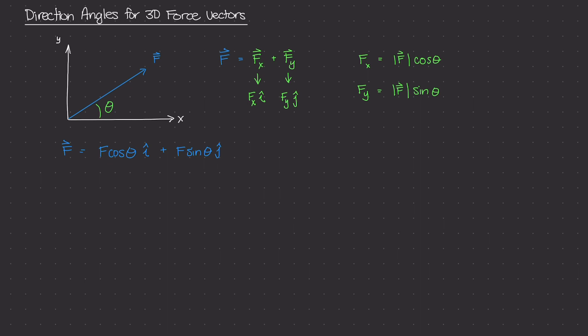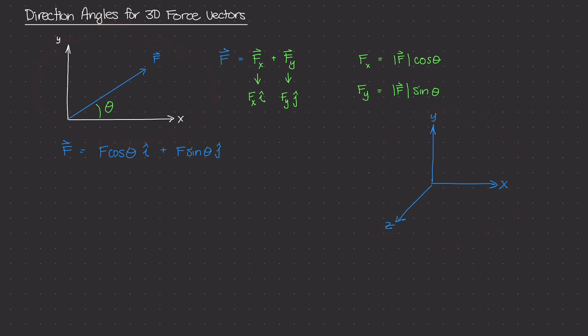The way we do that is by using direction angles — different from direction cosines, though they're related. In three-dimensional space, it's more useful to express the angles from each of the three positive axes. In a 3D Cartesian coordinate system with x, y, and z axes, we want direction angles measured from each positive axis to the force. So for a force in 3D space, you need the angle it makes with the x-axis, the y-axis, and the z-axis. Those three angles are known as direction angles.